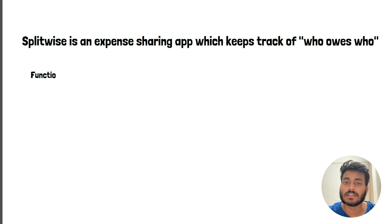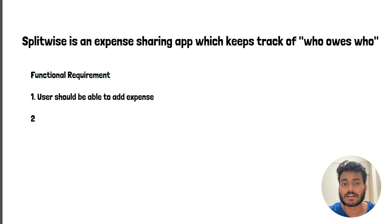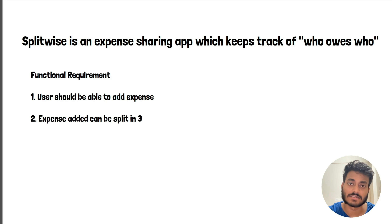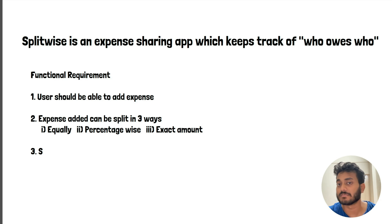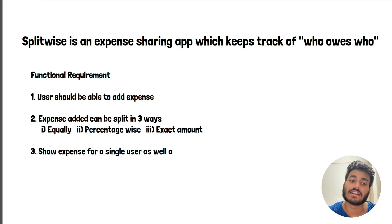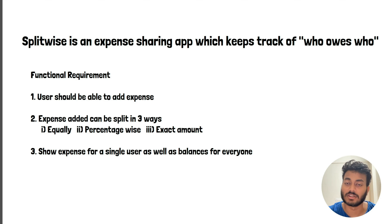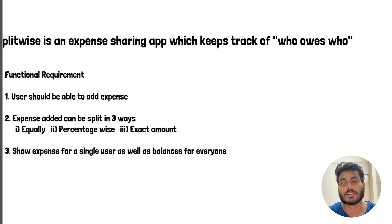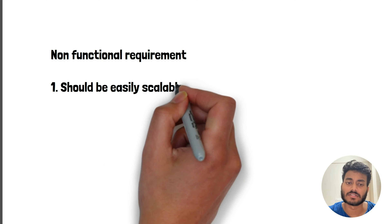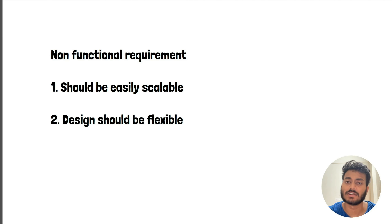We'll keep it simple for this video. The functional requirements include that a user should be able to add an expense. The added expense can be of three types: equally split, percentage-wise split, or an exact amount that you have paid on somebody else's behalf. At the end, it should show expenses for a single user as well as balances for everyone.